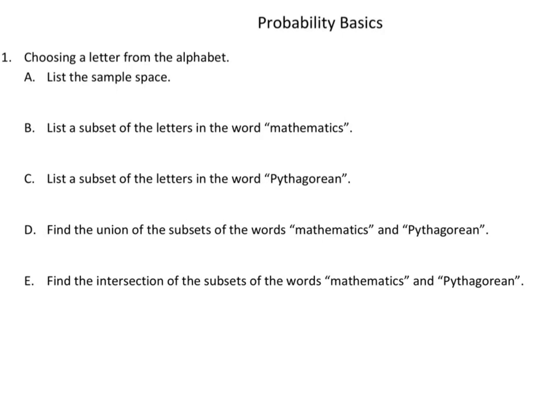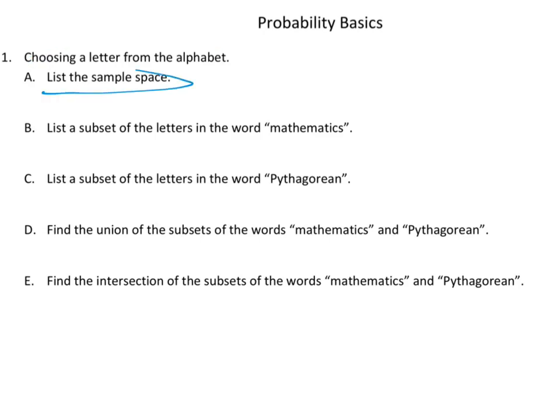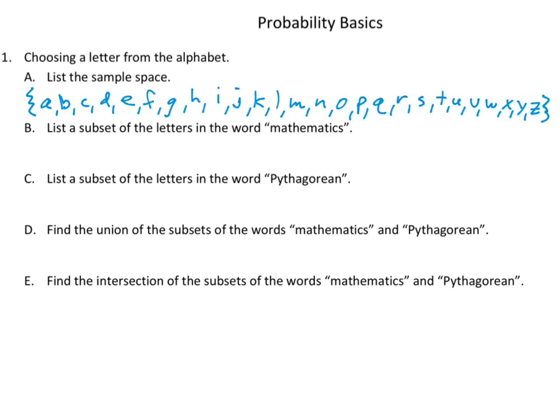Our event here is choosing a letter from the alphabet, and it's looking for the sample space first. Remember, the sample space — just put squiggle brackets and list the letters of the alphabet, which there are 26 of them. Take a moment to write down the 26 letters with a comma between them, and there you go — the entire alphabet. The sample space is kind of large, there are 26 things, but that's okay.